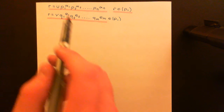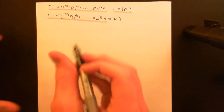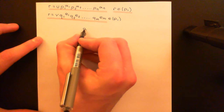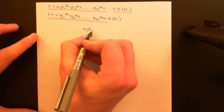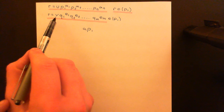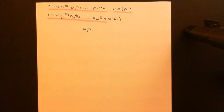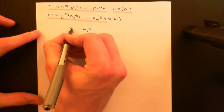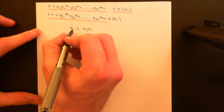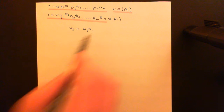What I can now conclude is that at least one of the elements in this product must be in the principal ideal generated by p1. It's not going to be the unit, so it must be one of the irreducibles in the second irreducible factorization. Let's call it qi. So there must be some qi which is equal to a times p1 — some multiple of p1.